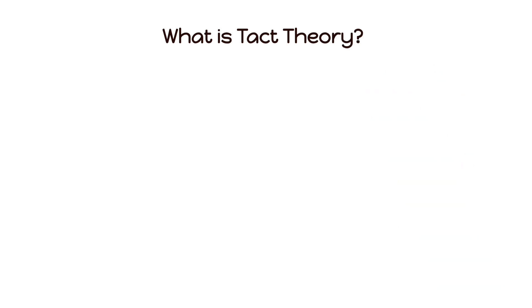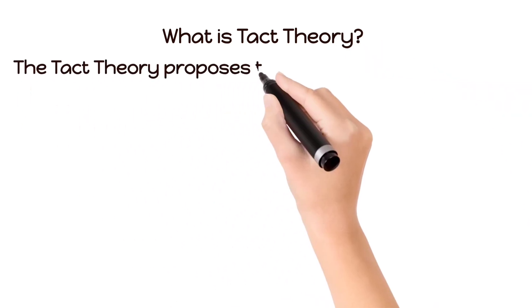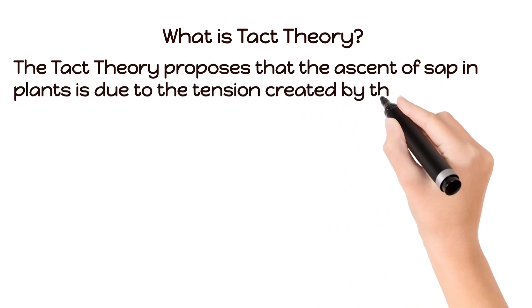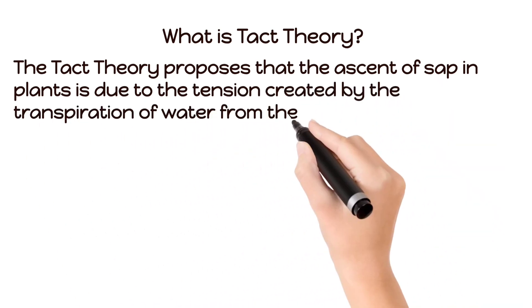What is TAC theory? The TAC theory proposes that the ascent of sap in plants is due to the tension created by the transpiration of water from the leaves.